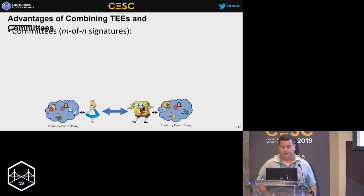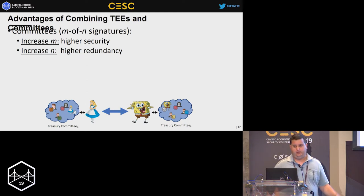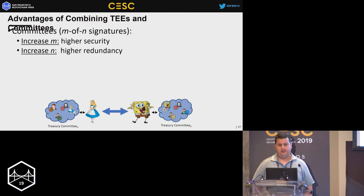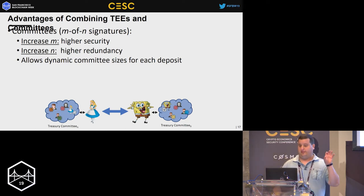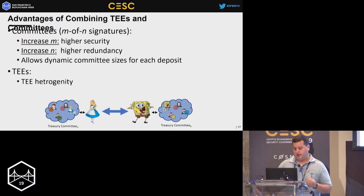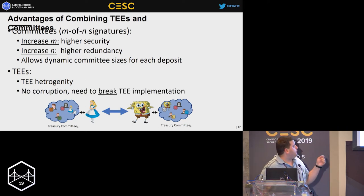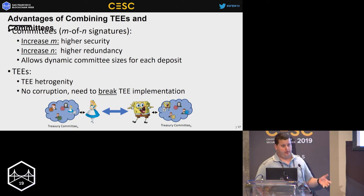Committees use M-of-N signatures. If you increase M, you get higher security — you need more TEE implementations per transaction. If you increase N, you get higher redundancy — more copies of state, more flexibility in choosing the subset of M members. It also allows dynamic committee sizes per deposit: large-value deposits can have more committee members and more signatures, while a $10 channel could have a committee of one. TEEs allow diverse implementations and break the need for corruption — you must break a TEE implementation to break the channel, whereas with a plain committee you could just corrupt members.